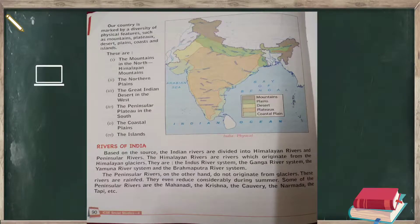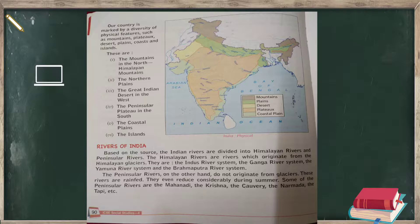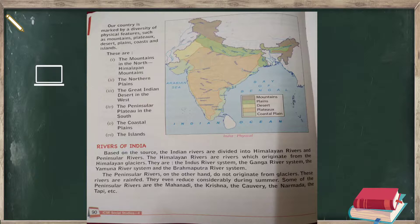The Himalayan rivers originate from the Himalayan glaciers and include the Indus river system, the Ganga river system, the Yamuna river system, and the Brahmaputra river system. The Peninsular rivers do not originate from glaciers — they are rain-fed rivers, which means they receive water only during rainfall. They reduce considerably in volume during summer.